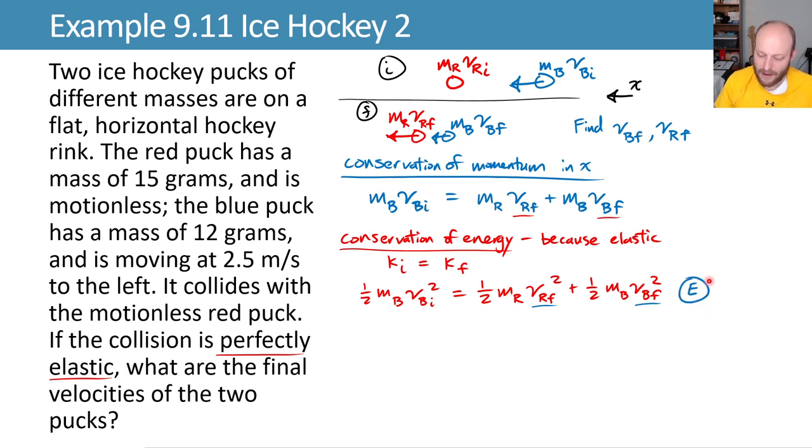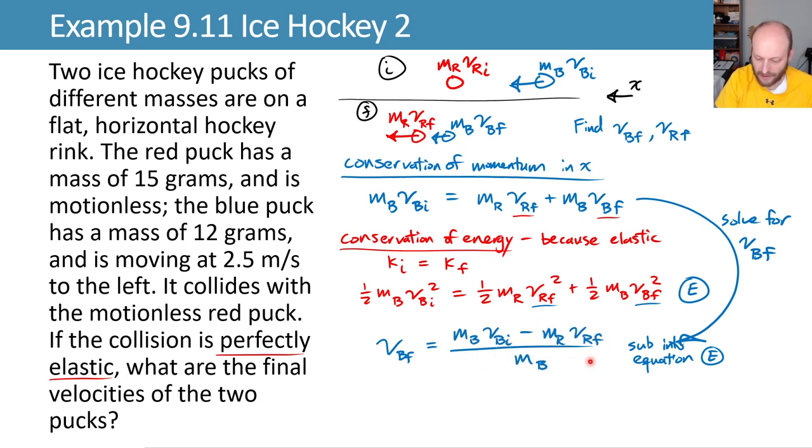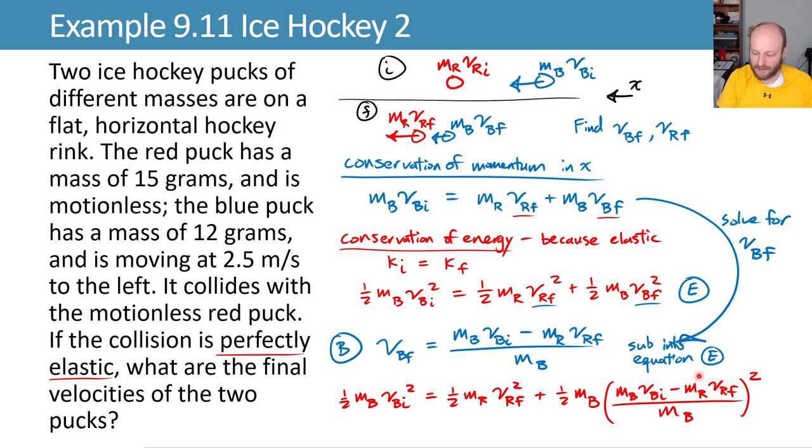We'll call this equation E for energy. And we will solve our momentum equation for vbf in terms of the other stuff in the equation and then substitute it back into our energy equation. So solving that we get vbf in terms of the other terms. That's subtracting this term to the left side and then dividing by mb. And now we're going to substitute this back in for vbf here. We'll call this equation B because we'll need to come back later. But the hope is that as we solve one equation for vbf and plug it into this other one, we'll now have one equation, one unknown with just vrf as the unknown. So let's give ourselves a little bit more space here.